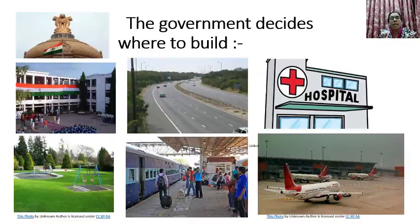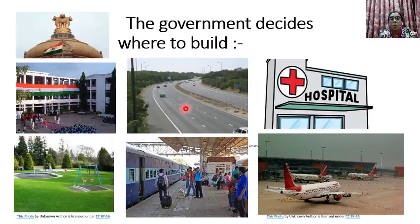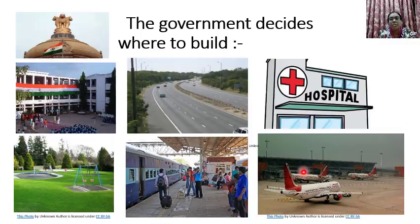The government looks after the needs, welfare and safety of the people of a country. Government also frames laws and rules to run the country. The government decides where to build schools, where to build roads, where to build hospitals, where to build public parks, where to build railway stations, and where to build airports. Government decides to build all these places.